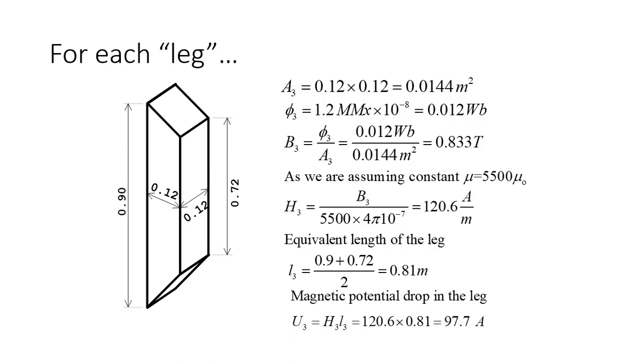97.7 amperes. If we repeat that for each one of the other three legs, we will have the total magnetic potential drop in the circuit. And that, according to Ampere's law, should be equal to Ni, the MMF applied by the coil.